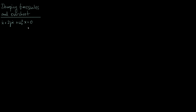To solve this, we try a solution x proportional to e to the lambda t and figure out what lambda has to be. Plugging that into the equation of motion, we find lambda must be minus gamma plus or minus the square root of gamma squared minus omega-naught squared.